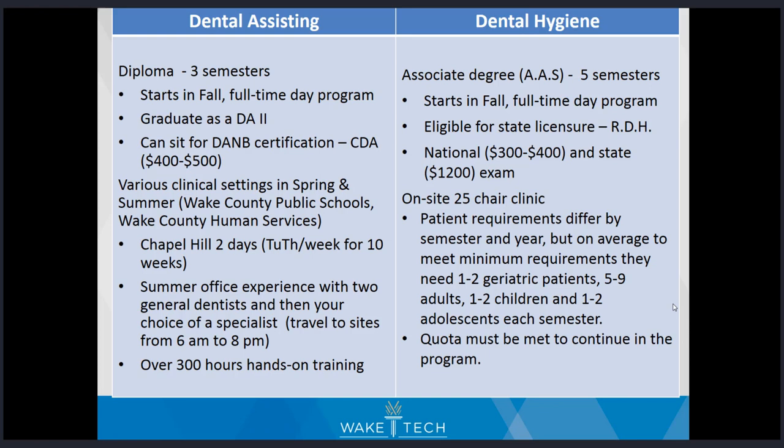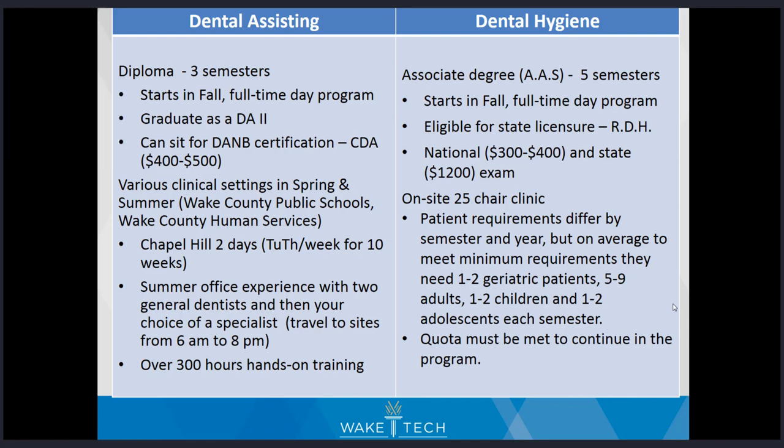Dental assisting is a three-semester, one-year full-time day program. The one year does not include prerequisite requirements. Thirty-two students are admitted each year, and the clinical application is due on May 15th. Students will graduate as DA2s and are eligible to sit for their CDA certification. As part of the program, students will graduate with over 300 hours of hands-on clinical experience, including two days a week at UNC Chapel Hill School of Dentistry and summer office experiences.